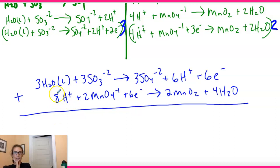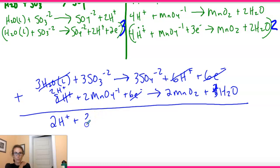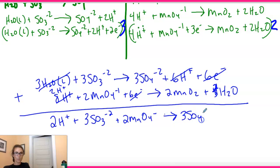Now we add the two half-equations and cancel. For H₂O: we have three on the left and four on the right, so we cancel three from each side, leaving one H₂O on the right. For H⁺: we have eight on one side and six on the other, so we cancel six from both sides, leaving two H⁺ on the left. We cancel the six electrons from both sides. We're left with: 2H⁺ + 3SO₃²⁻ + 2MnO₄⁻ → 3SO₄²⁻ + 2MnO₂ + H₂O.